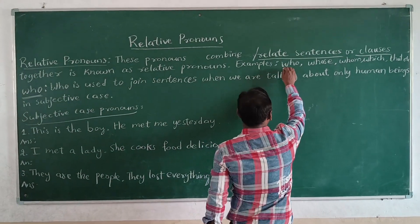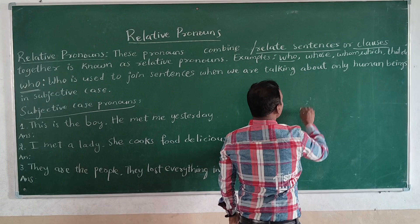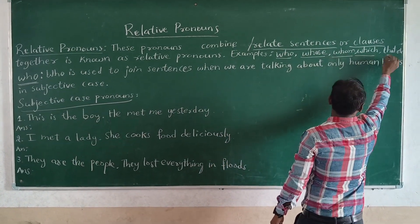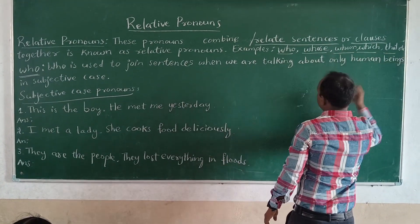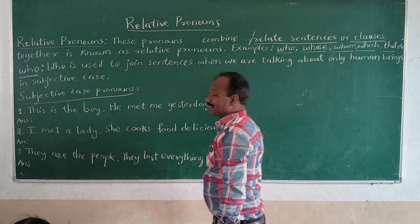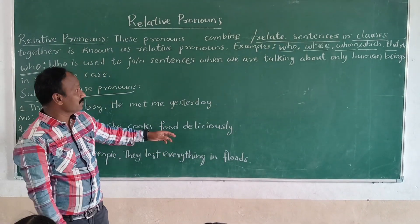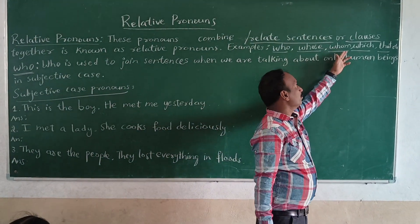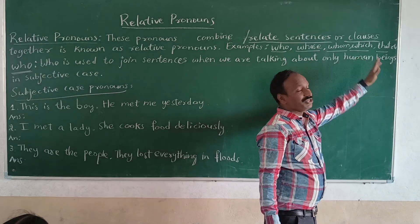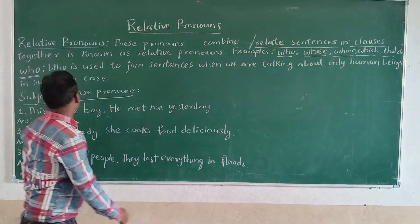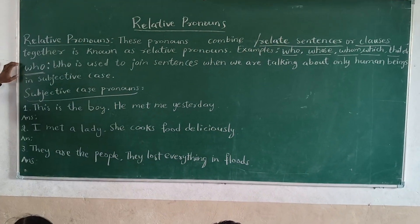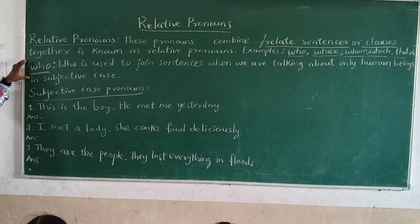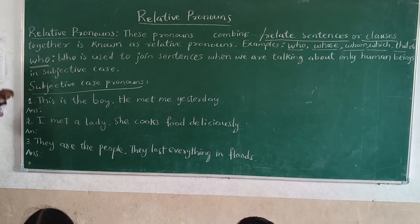Here are examples of relative pronouns: who, whose, whom, which, and that. So what are the examples of relative pronouns? Who, whose, whom, which, that. And now we will see how these words are used to join sentences.